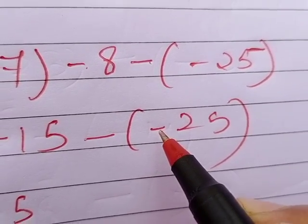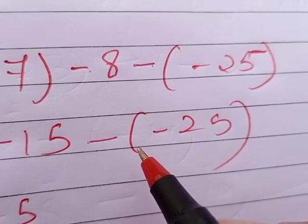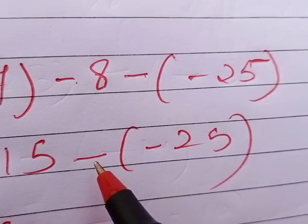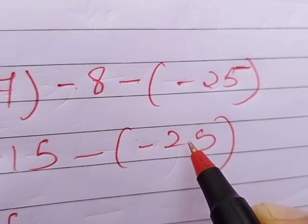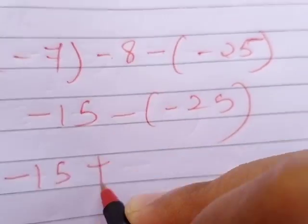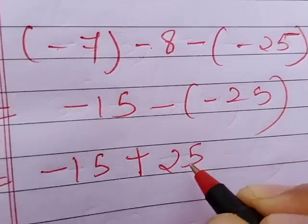And then this minus minus together make up plus. I told you, whenever we are having the minus question, that time the minus sign and the minus sign of the number, both of them together we'll see and make it plus, and then 25.